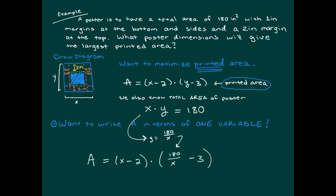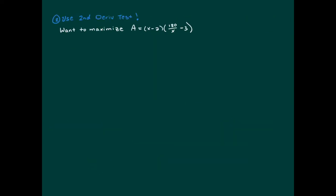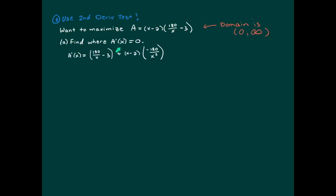Now we perform the second derivative test. First, find the critical points where the first derivative equals zero. Note that x represents the poster width, so x must be a positive number. Taking the first derivative — using the product rule here rather than FOILing first — we absolutely must simplify our derivatives. Leaving the derivative unsimplified makes setting it equal to zero very complicated algebraically.